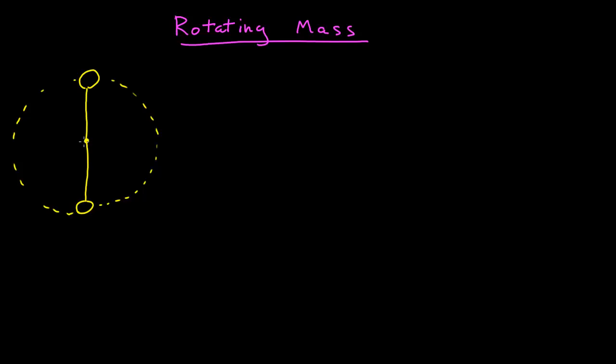So we have this mass rotating in a vertical circle, and we want to find the difference in the tension in the rope between when it's at the bottom and when it's at the top, which I'll call T sub T. I have a picture, I know what's going on, this thing is rotating in a circle, and now I want to say: what sort of physics applies to this problem? I'm going to go through the brainstorming. There's no single equation you're just going to write down to solve this problem — we're going to have to brainstorm to come up with relationships.